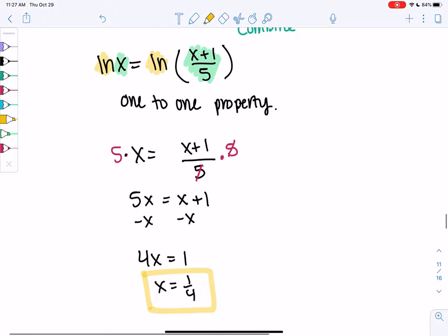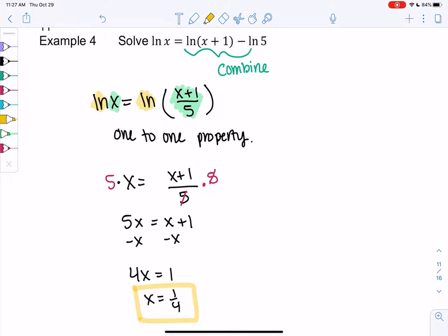And if you have a calculator, you can check your work. If you did ln of 1 fourth for the left side, we get about negative 1.386. And then ln of 1 fourth plus 1 minus ln of 5. I always like to check in the original because you never know where you made the mistake. And we get the same answer, negative 1.386. So it's always good to check your answer.